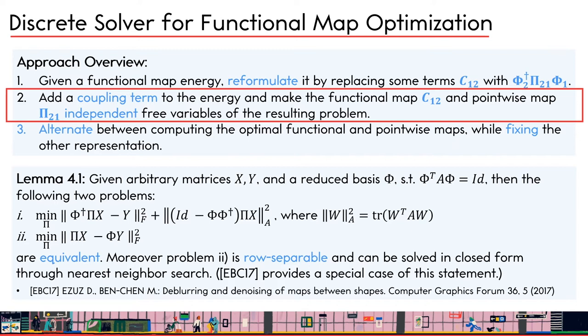To make this pipeline possible, the key step is to relax the original energy in a way that allows efficient point-to-point map recovery. This relaxation relies on a lemma: for arbitrary matrices x and y and a reduced orthogonal basis phi, we can construct two problems. The first problem can be derived from many functional map energies. The second is in a simpler row-separable form that can be solved in closed form. We show these two problems are equivalent — please see our paper for the proof and additional discussion.